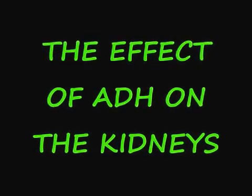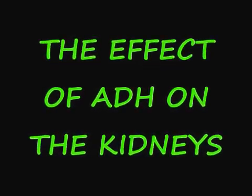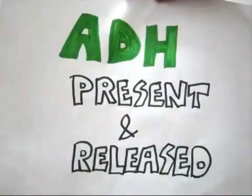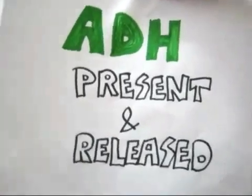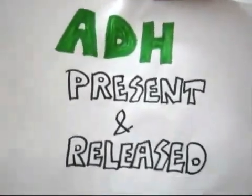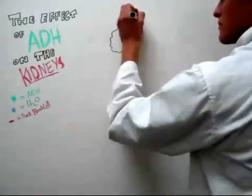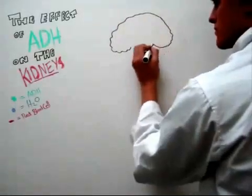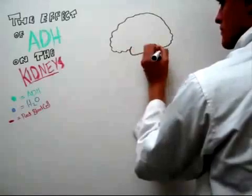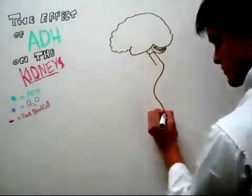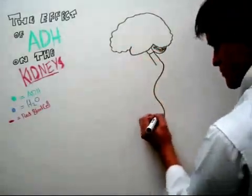The effect of anti-diuretic hormone on the kidneys. First up, anti-diuretic hormone under normal conditions. We have anti-diuretic hormone in green, we have water in blue, and red blood cells in red.